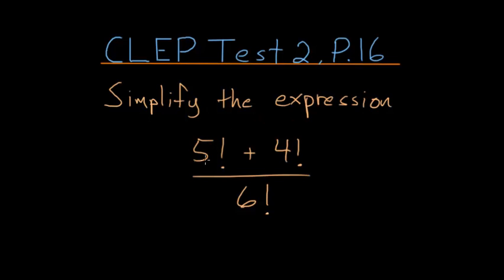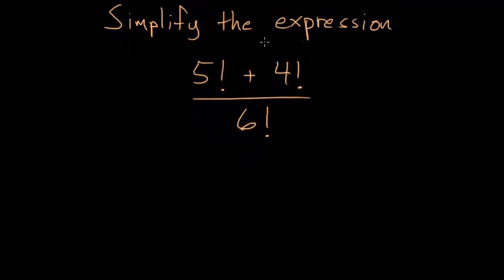Simplify the expression 5 factorial plus 4 factorial divided by 6 factorial. So with a problem like this, it might be easiest to first expand each of these factorials.